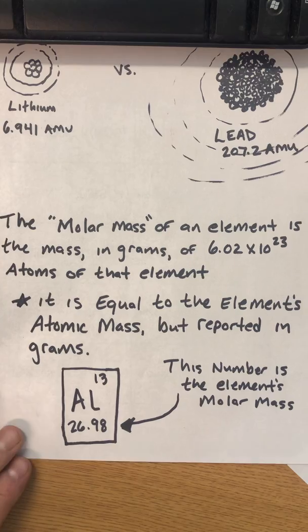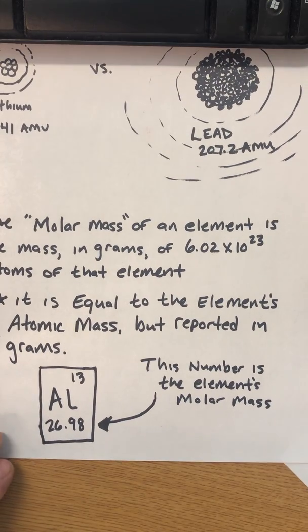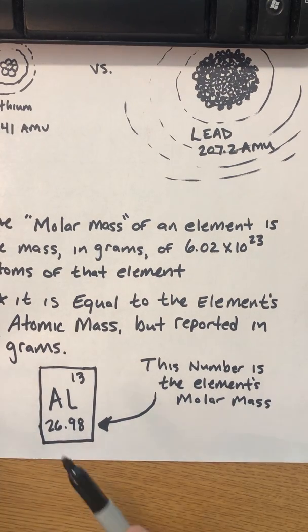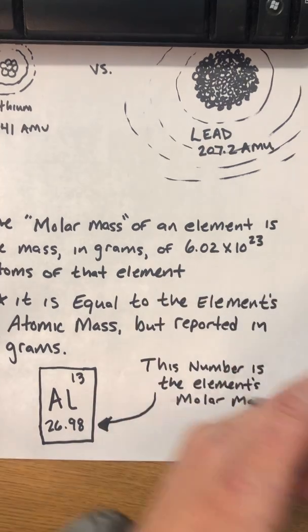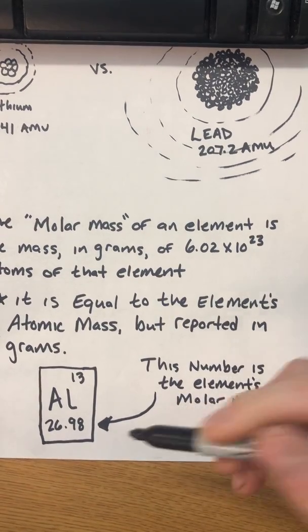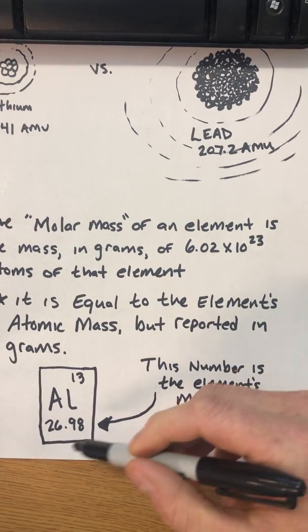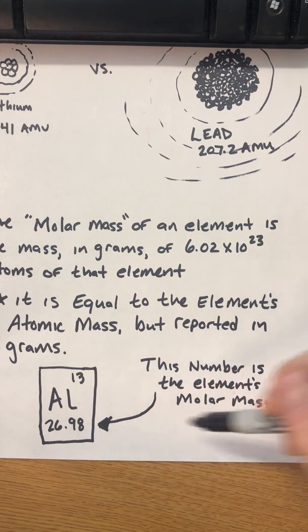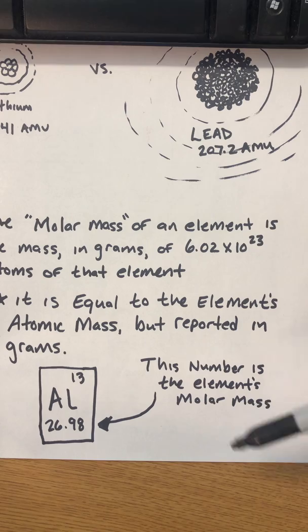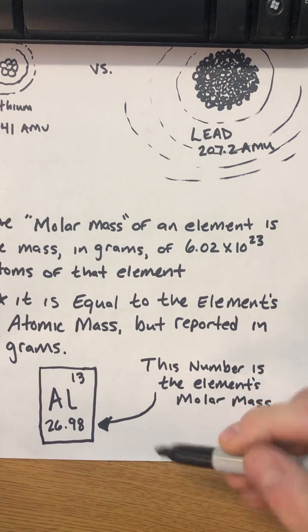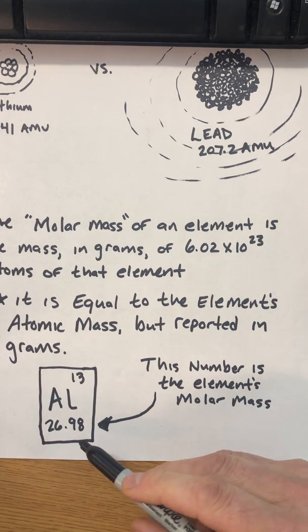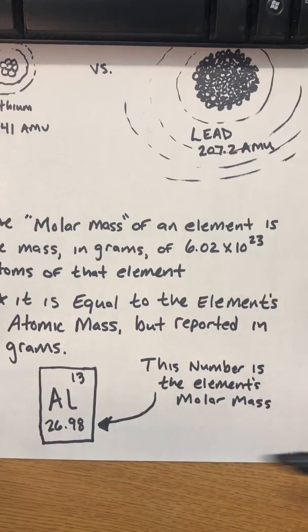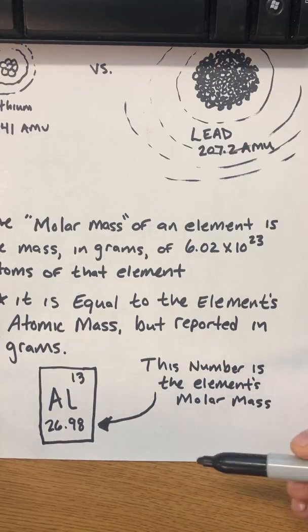And so when you look at the periodic table, you have these squares where these element symbols live. So this one's aluminum and the atomic mass is listed down here. This is the average weighted atomic mass. We're now going to call that the molar mass in grams. And so the 26.98 AMU, that is now just 26.98 grams.